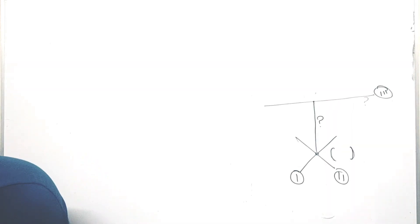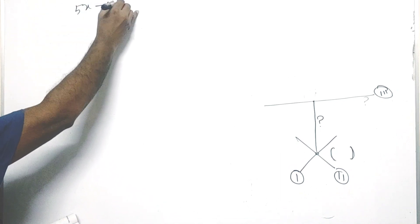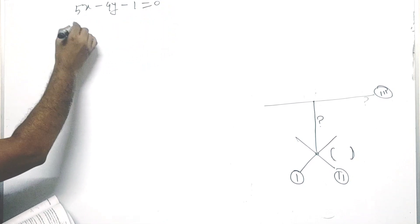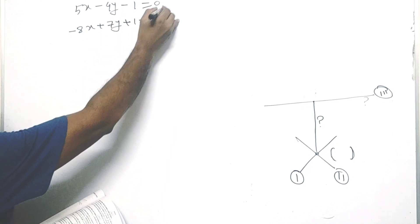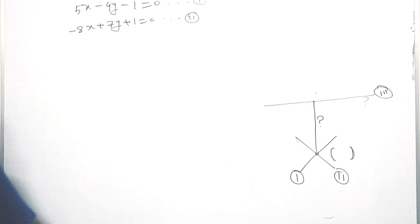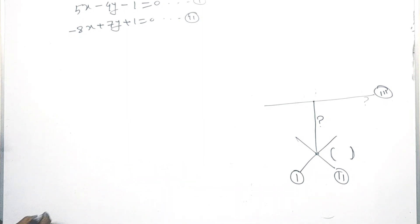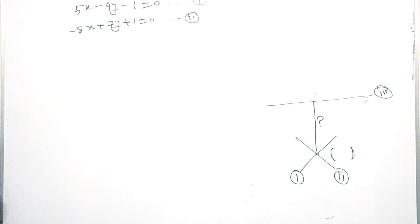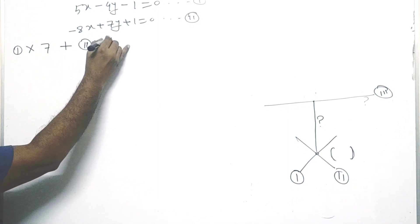So, as I will write the first thing, I will read the two lines: First line is 5x minus 4y minus 1 = 0. Second line is minus 8x plus 7y plus 1 = 0. We have written these two lines — the first line and the second line.